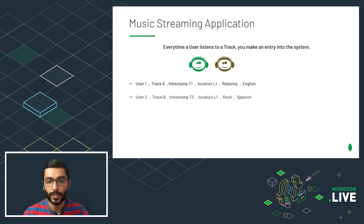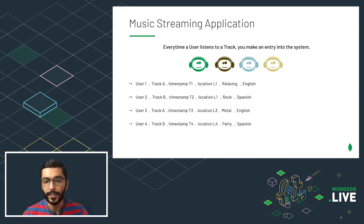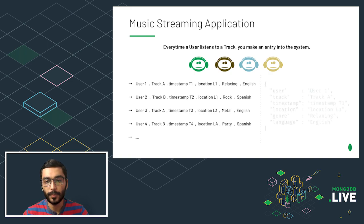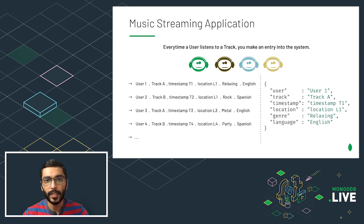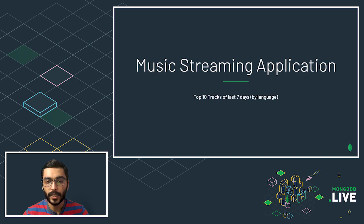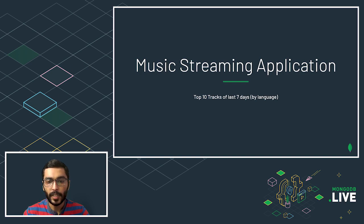Multiple users and events flow into the system. Each of these events looks something like this in our database collection, having everything as key-value pairs. Let's pick up a single use case and see how to model a query for it — the top 10 tracks of the last seven days for a particular language.